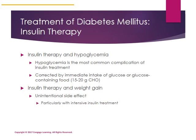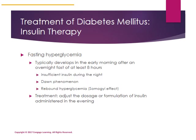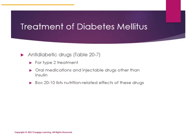Fasting hyperglycemia is a paradox that can occur after an overnight fast of at least eight hours. Treatment involves adjusting the dosage or formulation of insulin to be better administered in the evening to cover those eight hours. There are a number of anti-diabetic drugs available for type 2 diabetes treatment; side effects are outlined in Box 20-10, and some of those side effects have nutrition-related effects.